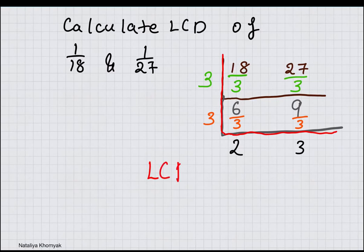So least common denominator is 3 times 3 times 2 times 3 again, which is equal to 54.